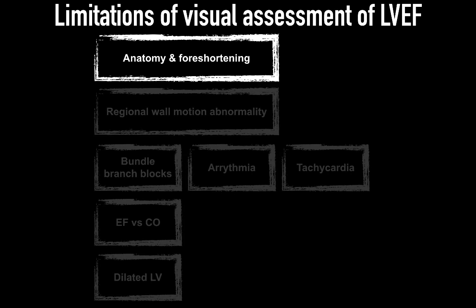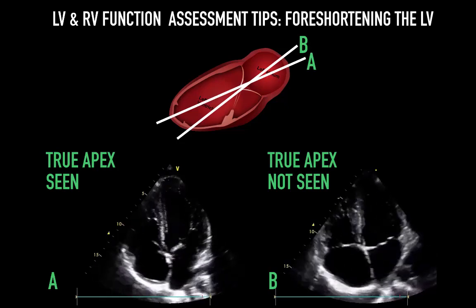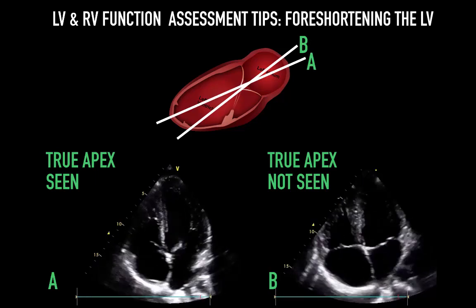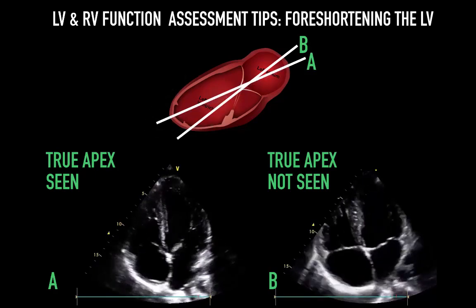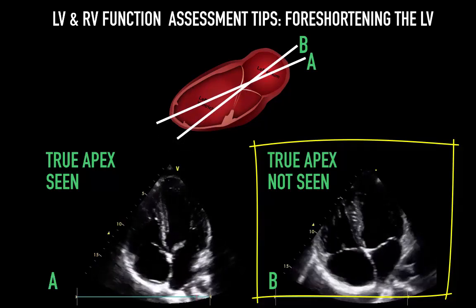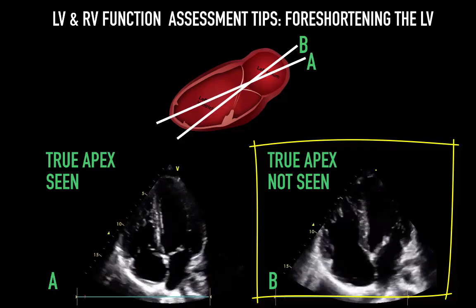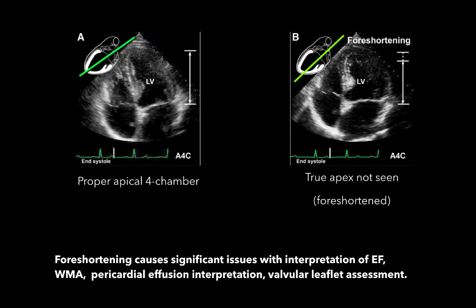Foreshortening is the incorrect measurement of the left ventricular long axis due to improper sector scan alignment. Basically, we're not cutting in the right place. The sector scan, instead of cutting across the true long axis of the left ventricle, cuts at an acute angle that yields a shorter axis than the true axis length. The bottom right image shows a foreshortened apex and ventricle compared to the left side. Foreshortening causes significant issues with interpretation of EF, wall motion abnormalities, pericardial effusion, and valvular leaflet assessment.